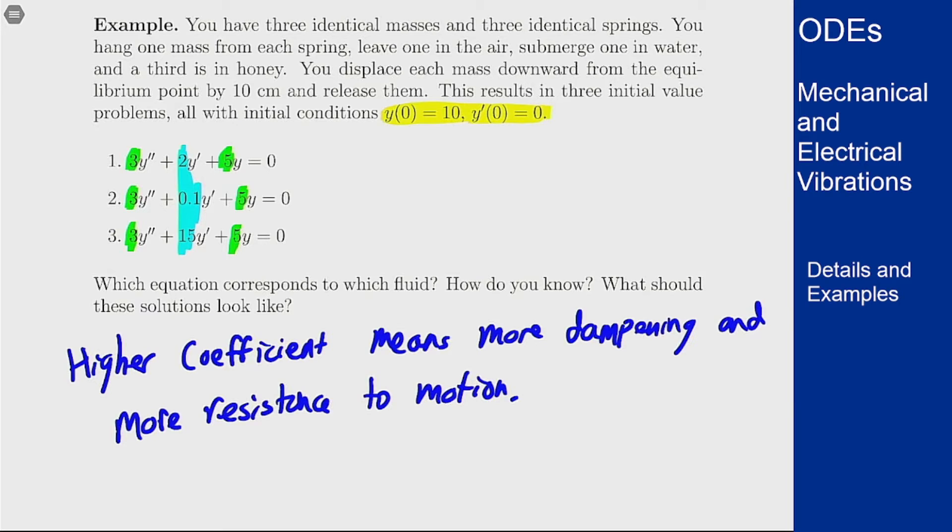So if we look at this we can see what is going to happen. Out of these three options—air, water, and honey—which should have the least resistance to motion? Well, it's the air.